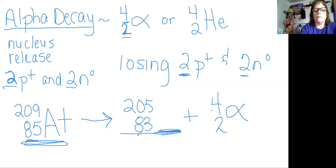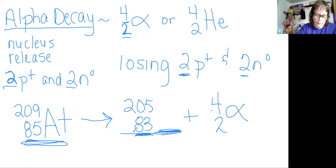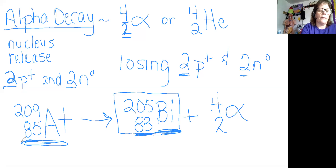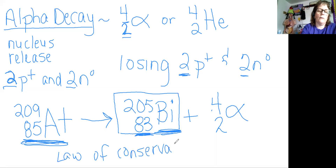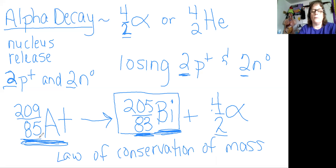We end up with 83 as our new atomic number. Now you have to figure out what element this is — you look at the periodic table, which gives you the atomic number. Atomic number 83 gives you bismuth, which has the symbol Bi. So the astatine is going to decay into bismuth. This whole equation is balanced — it's called the law of conservation of mass. 205 plus 4 gives you 209, and 83 plus 2 gives you 85, so it balances.